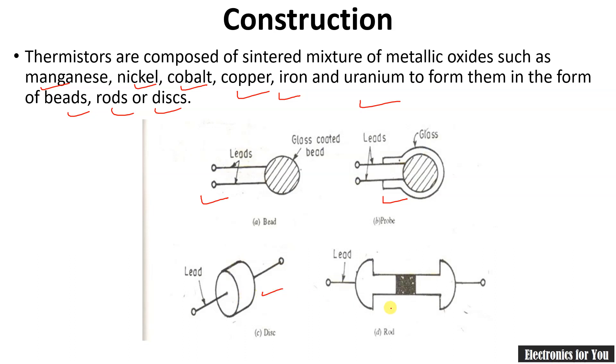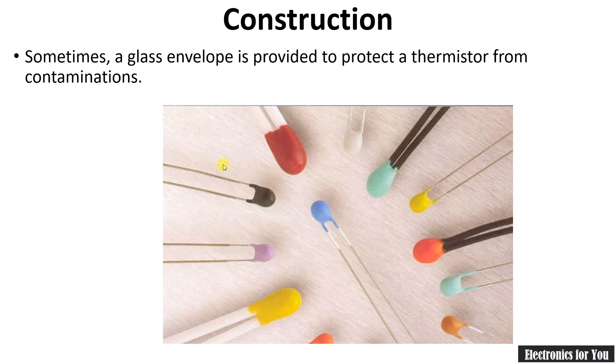It generally has two terminals because it is just the same as a resistor, which can further be connected to a bridge circuit and later on can be useful for the measurement of temperature. Sometimes glass envelope or ceramic coating is used for the protection of the semiconductor of this thermistor.